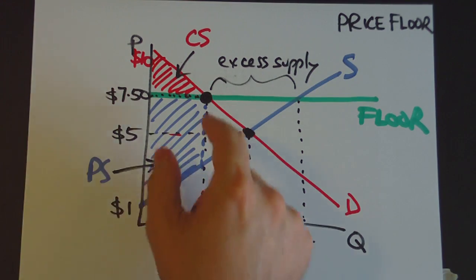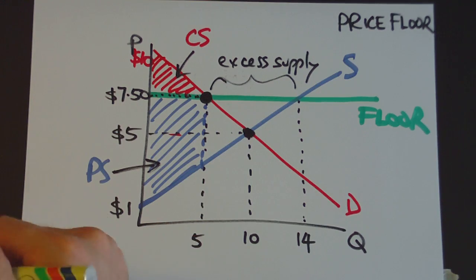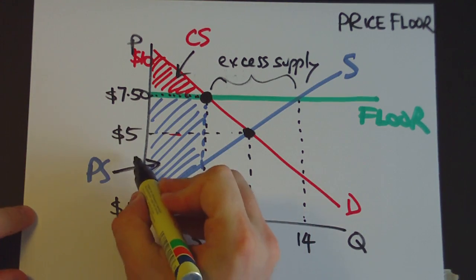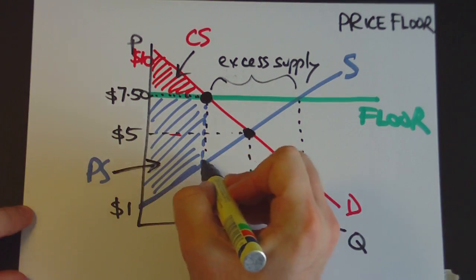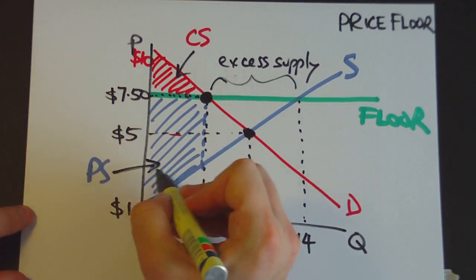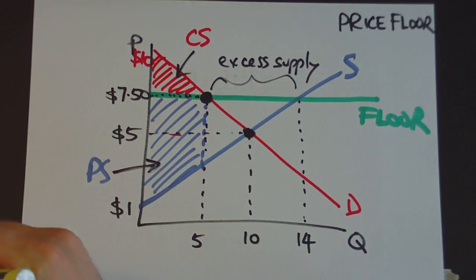Unfortunately, and you can obviously calculate that, I mean, this is a combination of a triangle here, so you can go half base times height to actually work out the area of that triangle here, and then you can calculate the area of this rectangle here as just simply base times height. So you can actually work out the dollar amount of that producer surplus here.